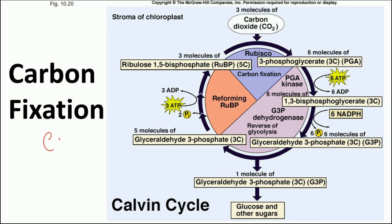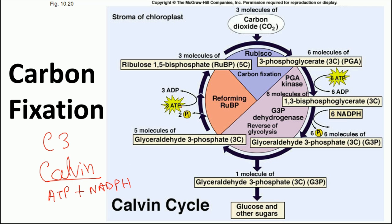In the Calvin cycle, two materials originating from the light reactions are required: ATP and NADPH. We also need carbon dioxide as a raw material, because the goal of the Calvin cycle is to fix carbon from CO2 into a chemical compound. This is a cyclic reaction that continuously produces ribulose 1,5-bisphosphate (RuBP) inside the plant cell, which is then available to bind carbon dioxide.